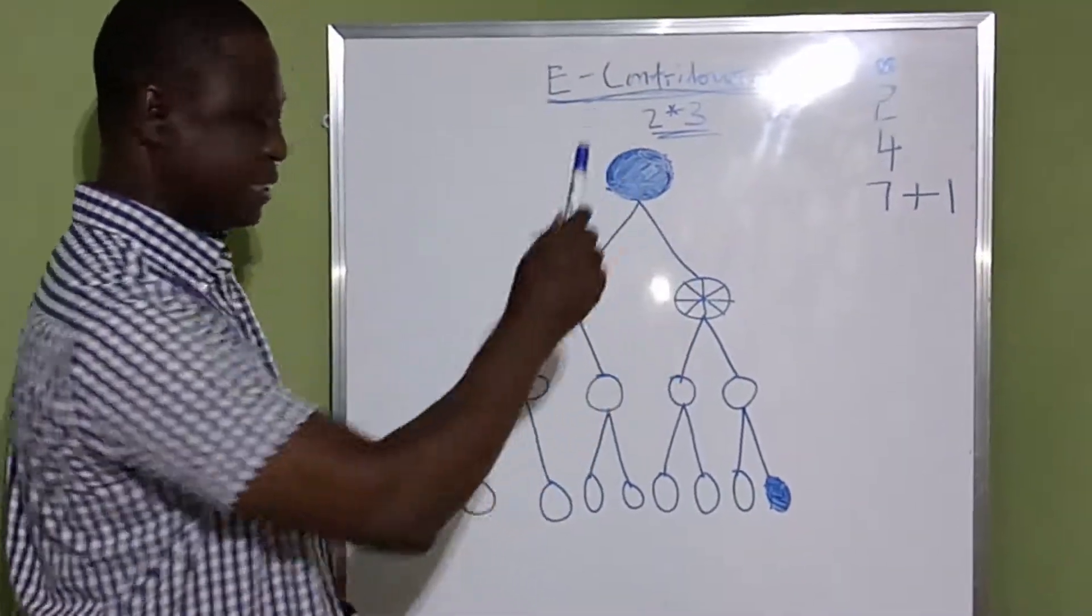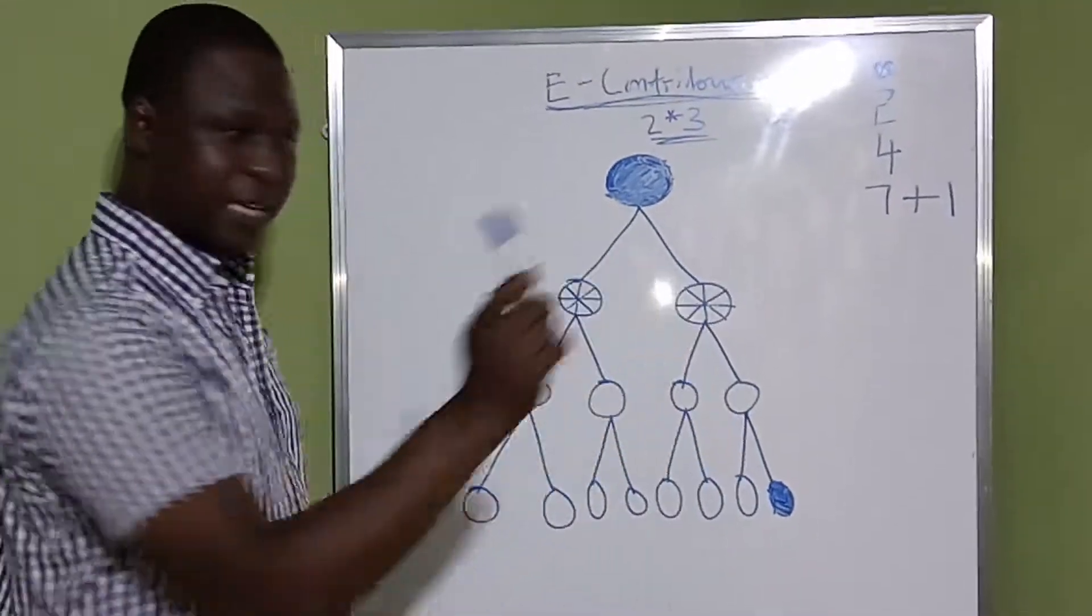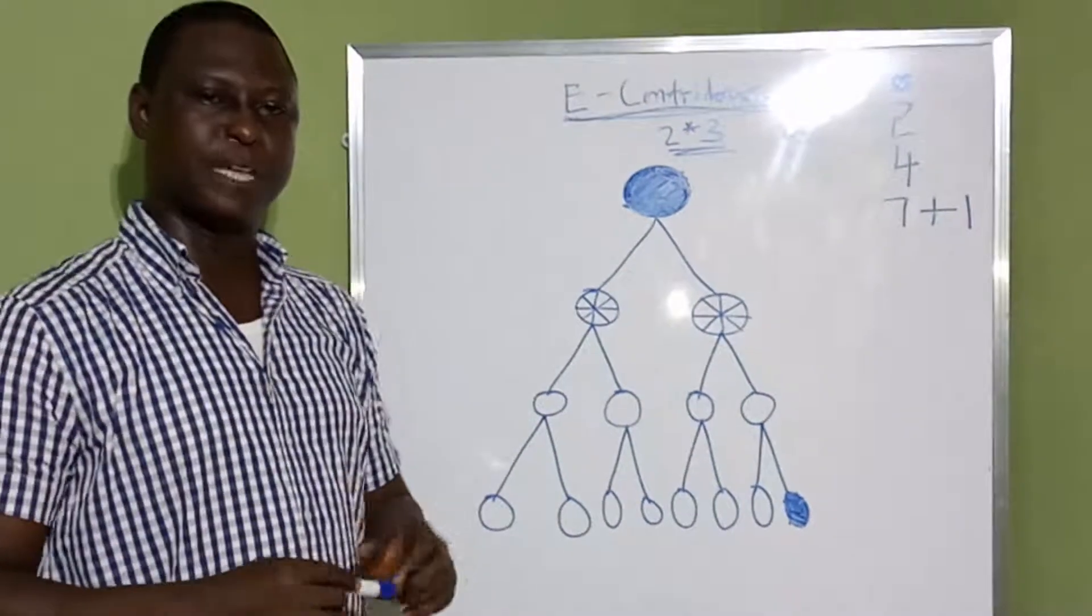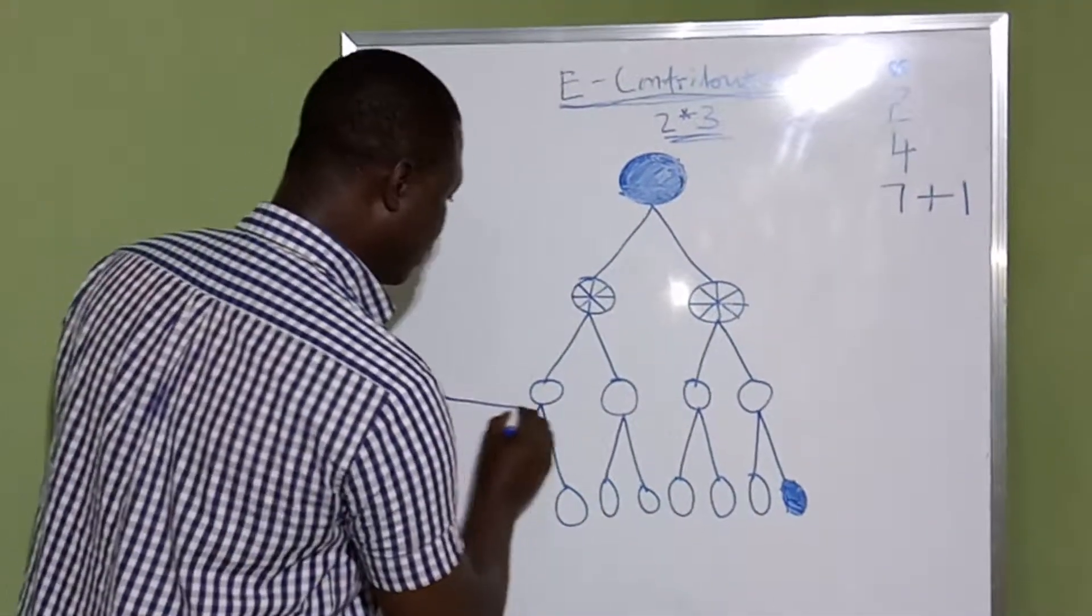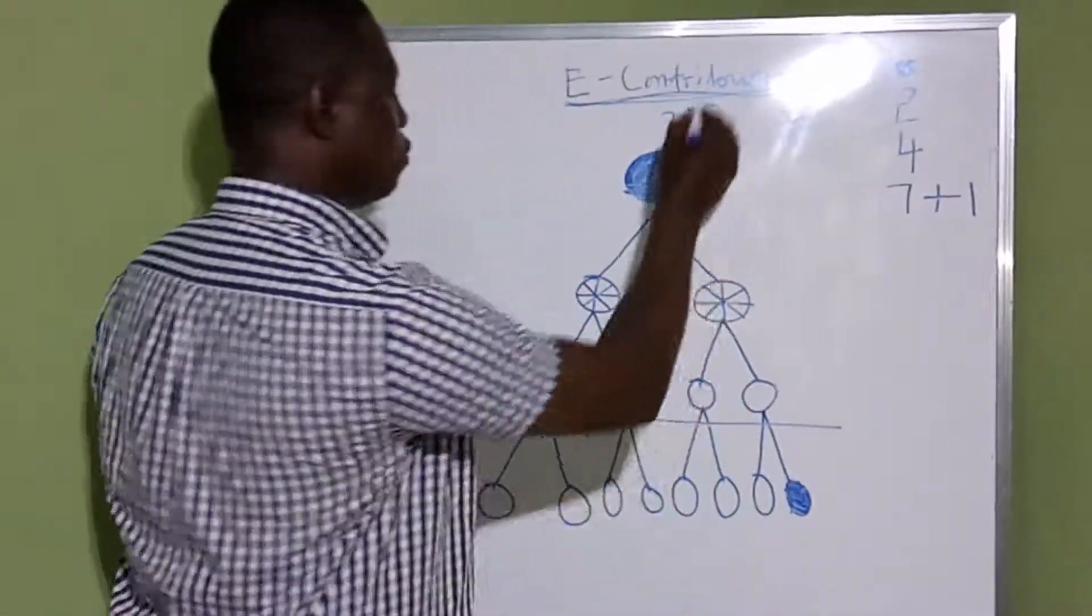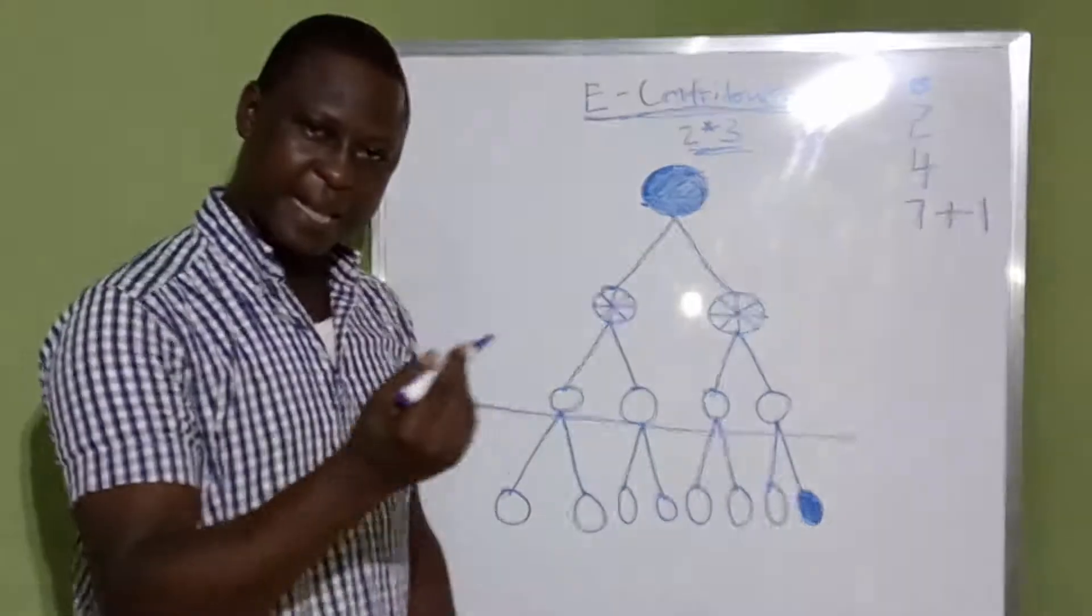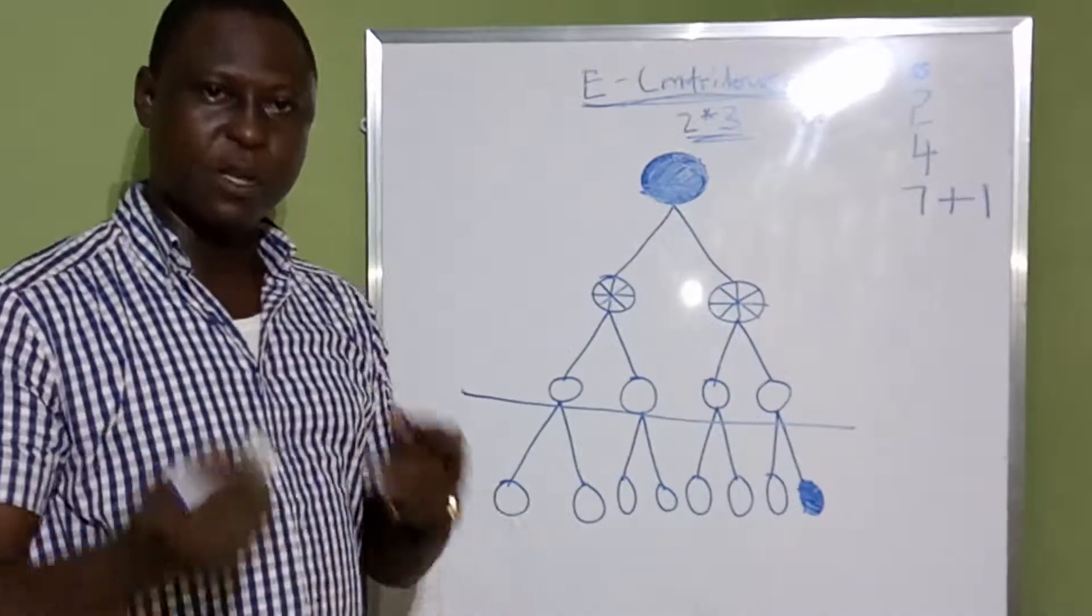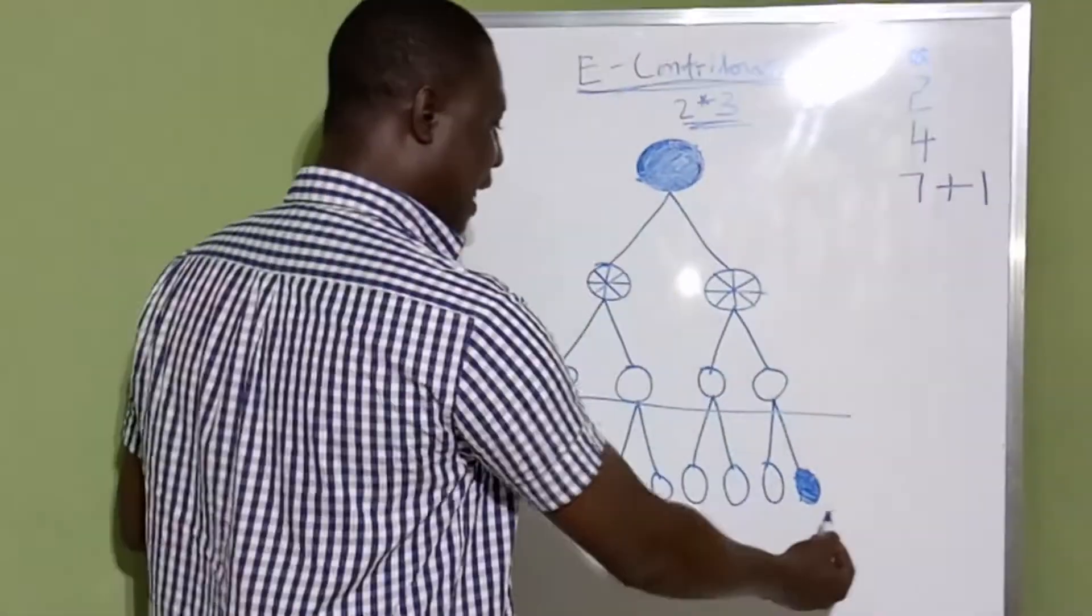For example, if this person brings in another person, it will start from here. If this person brings in another person, it starts from here. But another beautiful thing about this matrix is, at every point in time when you join a matrix, this space would have been filled up by the system itself. So the only place where you have to work as a team to fill up is this place. That means the last floor.